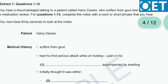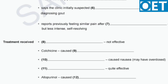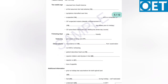In extract one, you hear a rheumatologist talking to a patient who suffers from gout. You will fill the gap with a word or short phrase that should be exactly what you hear in the audio — you cannot use your own words. After 30 seconds of reading the case notes, the audio will begin and last five minutes. You will read, write, and listen at the same time, and you do not get a second chance. After completing extract one, you proceed to extract two, which follows the same format.